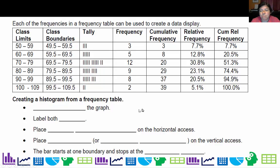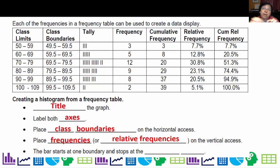When we create a histogram, first we're going to title the graph, label both axes, remember the cartoon, place your class boundaries on the horizontal axis, and place your frequencies or relative frequencies on the vertical axis. Remember the bars are going to touch on histograms. Bar graphs the bars don't touch, but on histograms the bars do touch because we're on a number line and we're trying to cover every possible value. So the bar starts at one boundary and stops at the next one.